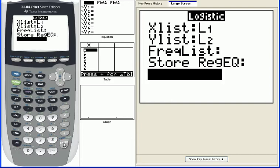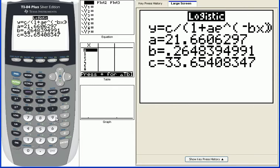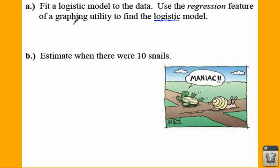We're going to calculate this, and the logistic model is not a very pretty model. It gives you an a, b, and c. You have a c divided by all this fun stuff. In English, what that model is going to look like is you're going to have y equals your c on top, which is 33.65, all over 1 plus 21.66 e to the negative 0.26x.